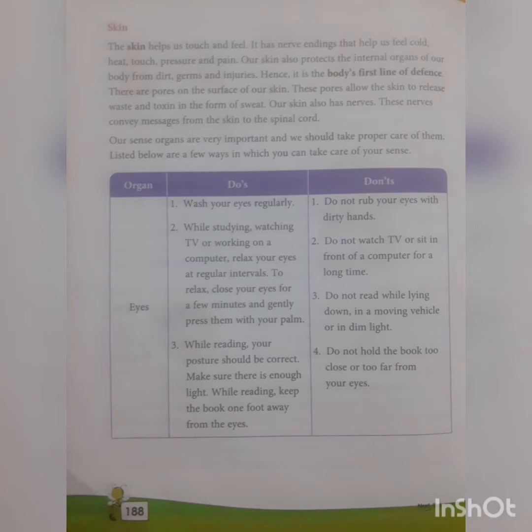So first sense organ we have, that is eyes. We all know that with the help of eyes we see the things around. It is an important sense organ and very delicate sense organ because only with the help of eyes we can see things. Now first thing which we have to talk about: in the book it is given do's.